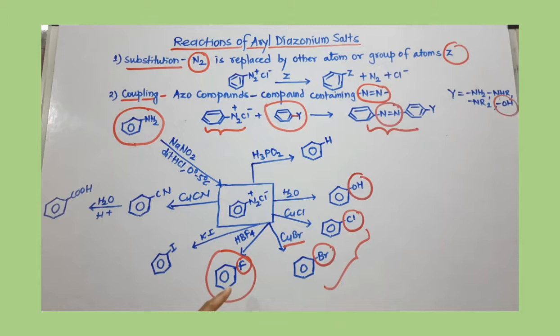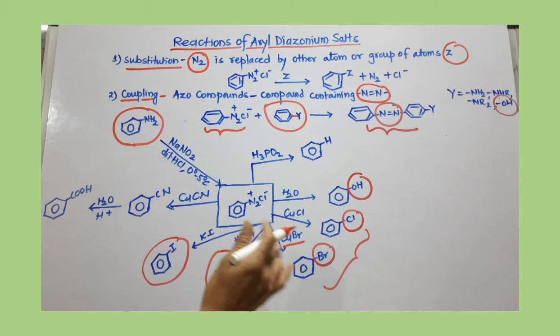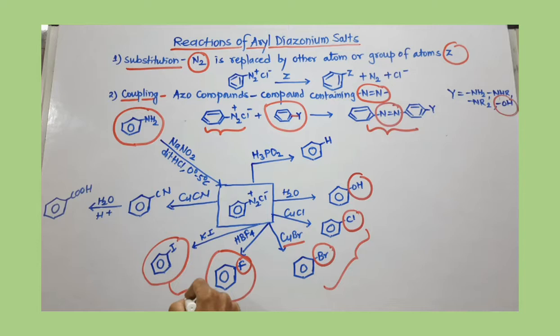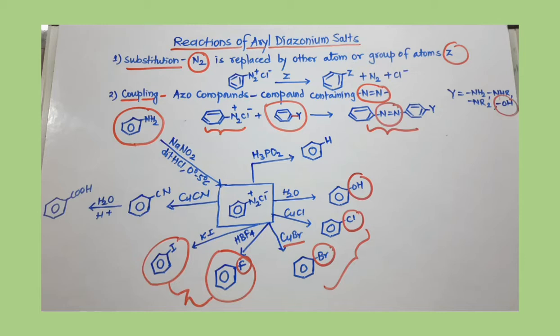Using HBF₄, N₂ is replaced with F to give fluorobenzene. Using potassium iodide (KI) or sodium iodide (NaI), you can prepare iodobenzene — this is also not possible by any direct method. Both fluorobenzene and iodobenzene can be prepared from aniline via diazotization followed by substitution of the aryl diazonium salt.